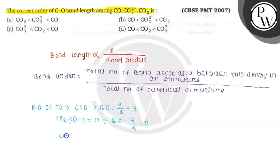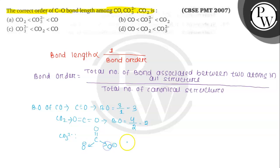Now bond order of CO₃²⁻. The structure of CO₃²⁻ gives total number of bonds = 4, and total number of canonical structures = 3. So bond order = 4/3 = 1.33.